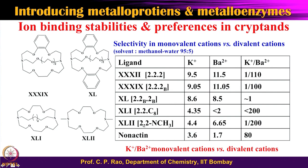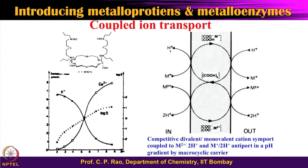If instead of 2,2,C8 you make 2,2,N-CH₃, it reverses and becomes divalent cation selective. If you look at the natural antibiotic molecule nonactin, there is a preference for the monovalent cation by about 80-fold. All these clearly demonstrate that as you play with the molecule in terms of pore size, the atoms being bound, and the lipophilicity/hydrophilicity, all of these aspects change the monovalent versus divalent transport and association characteristics.